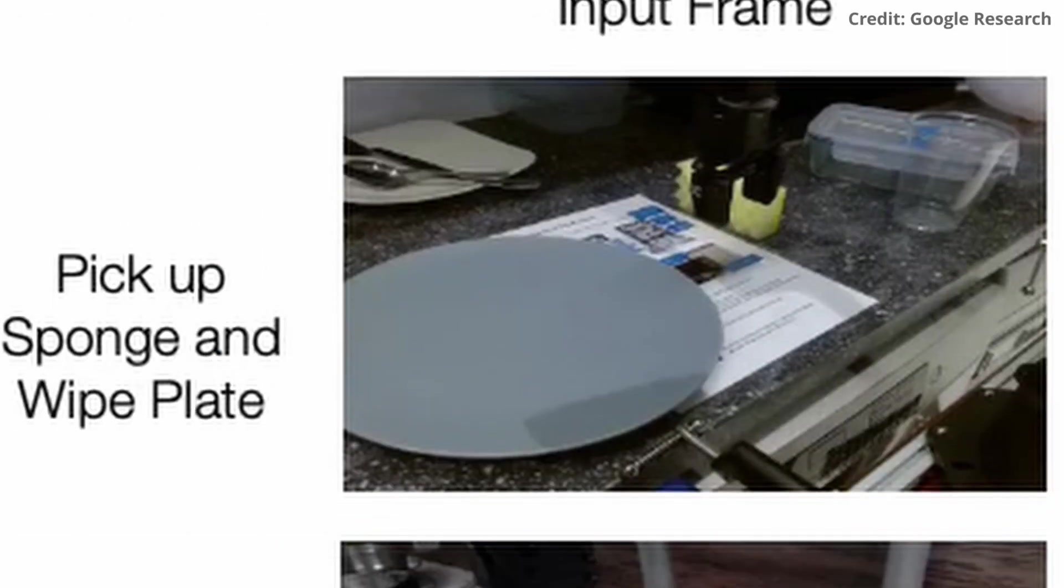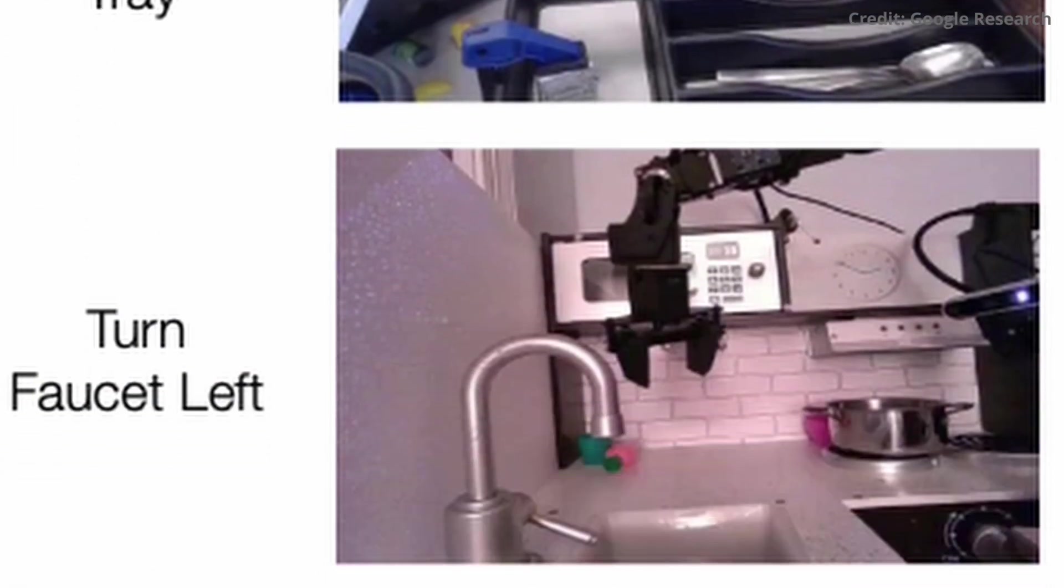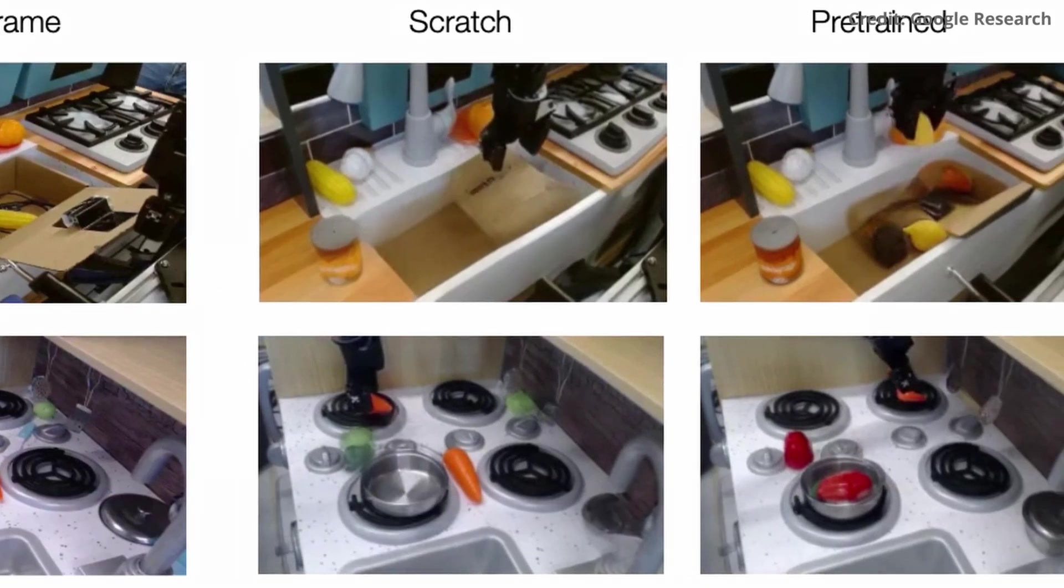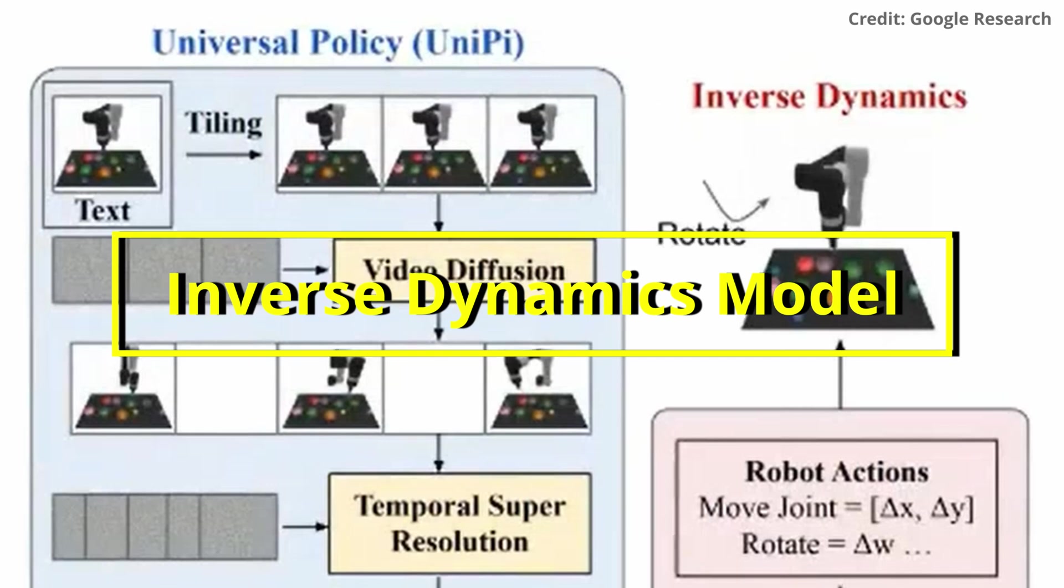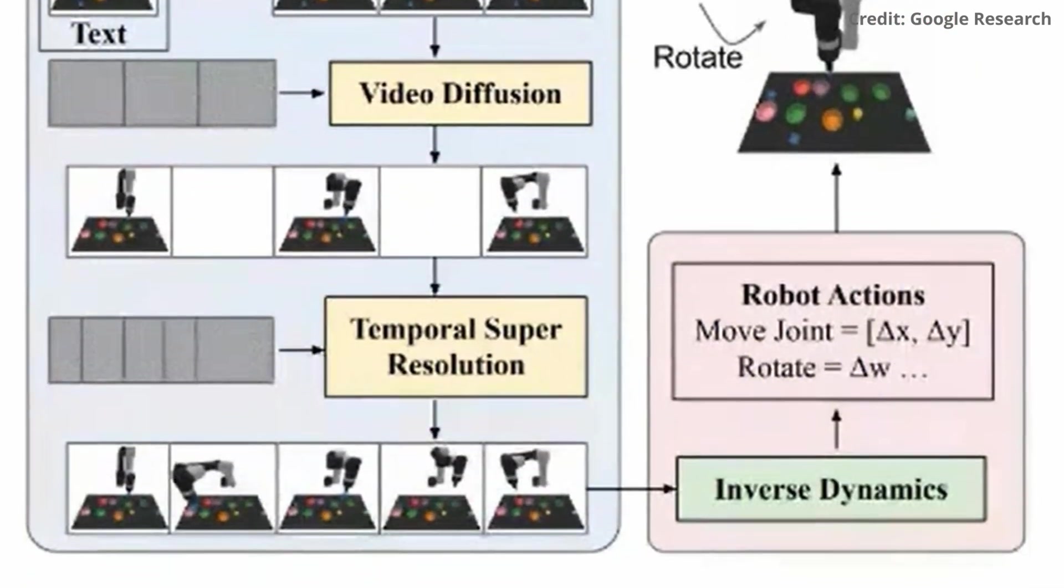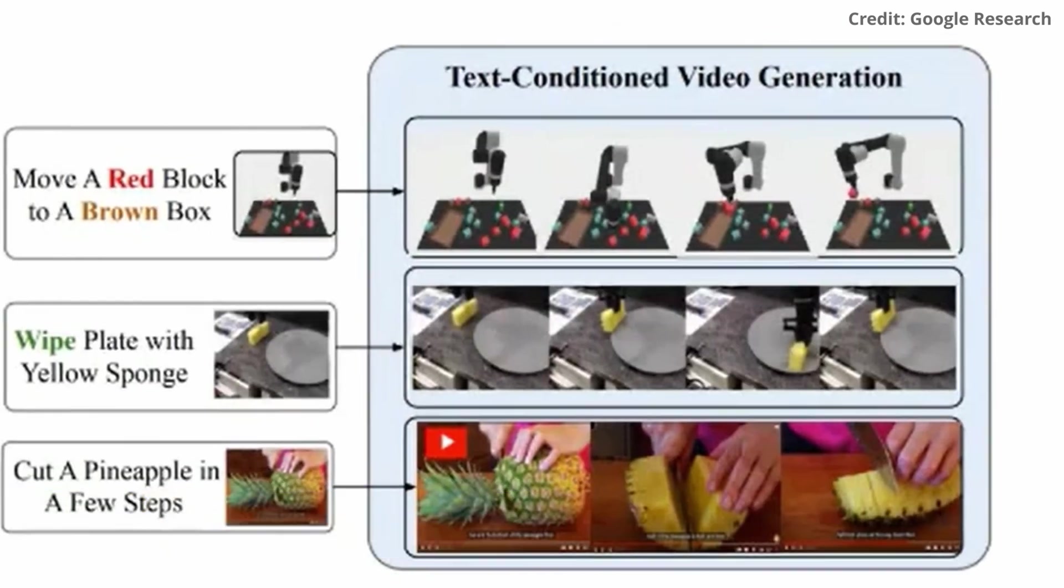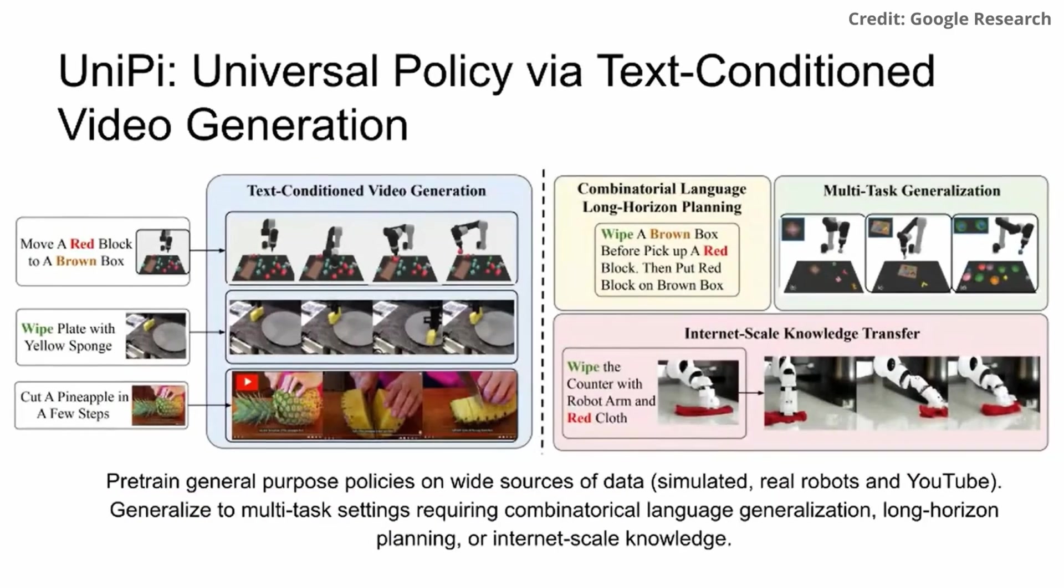Importantly, the concept involves a planner that accepts an image frame and a text prompt defining the goal, and then generates a trajectory as a video sequence depicting the desired course of action. The actions executed in the video are then extracted by an inverse dynamics model, which is a unique approach because it utilizes the universality of language and video to adapt to new goals and tasks across various environments.